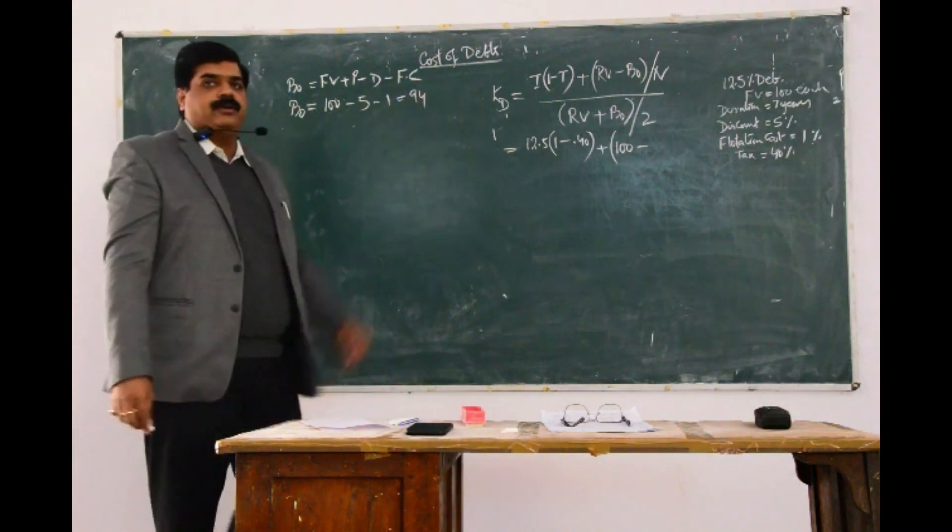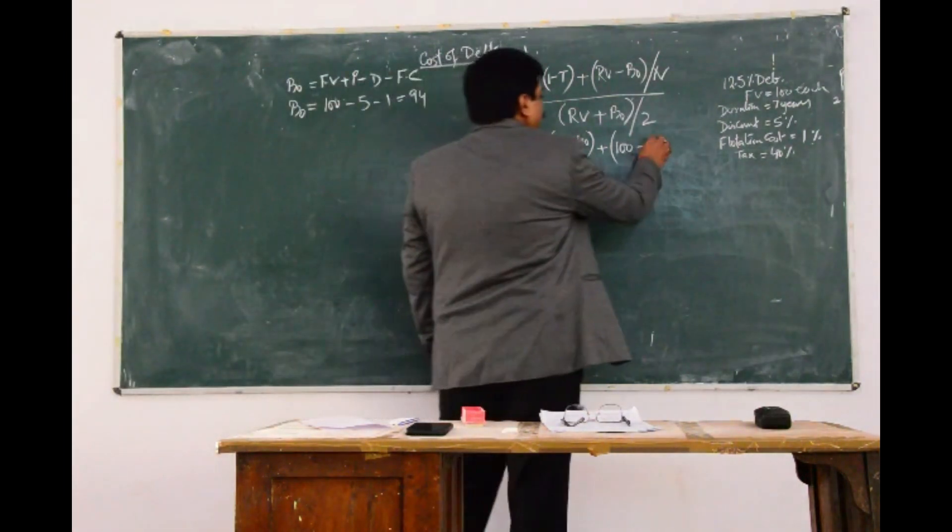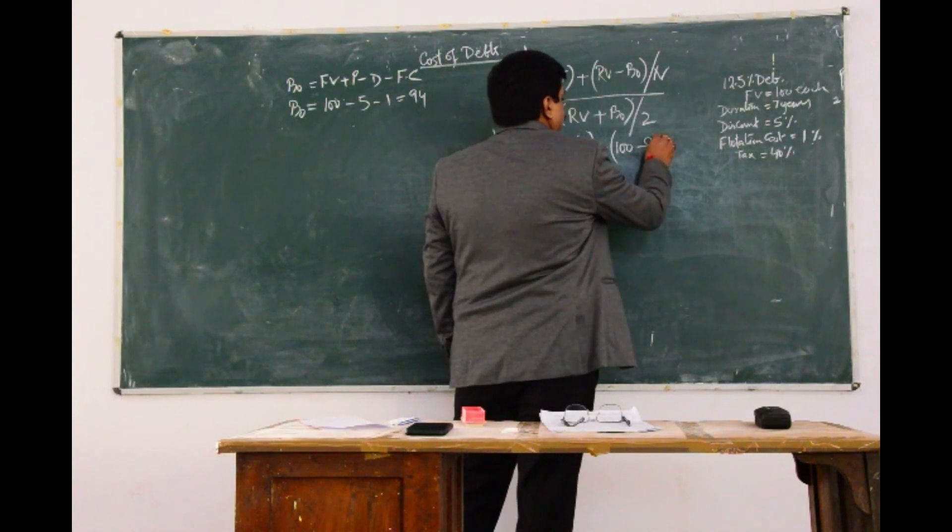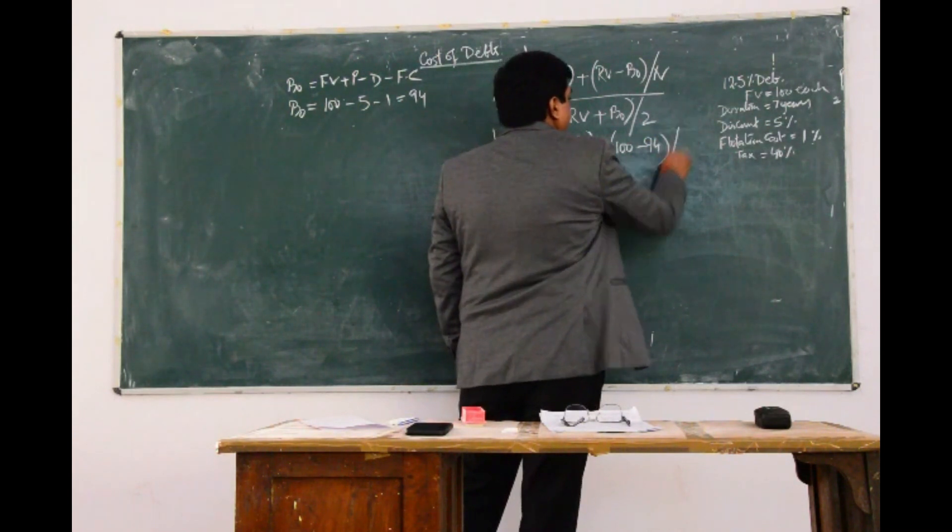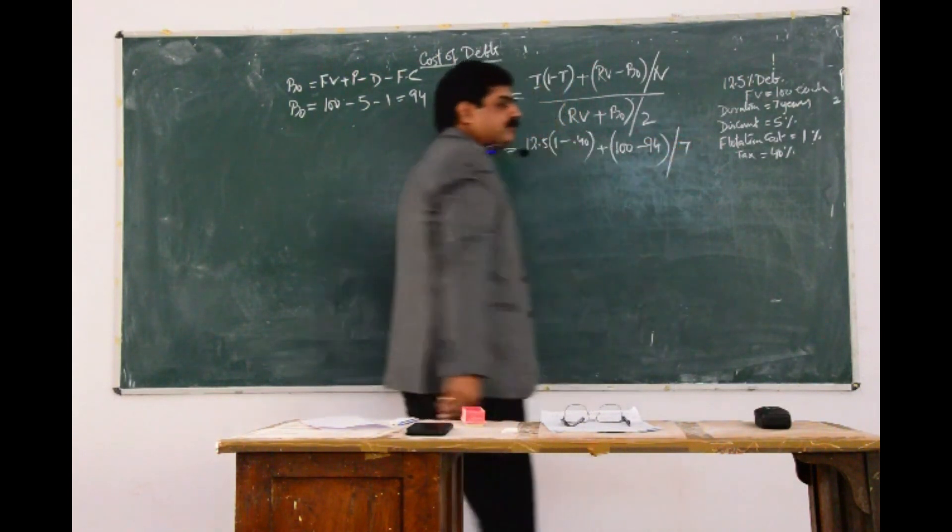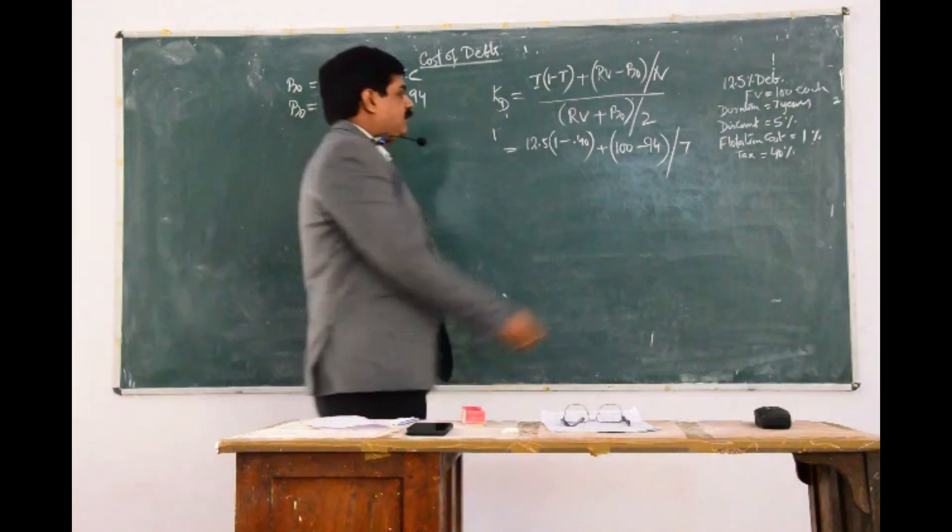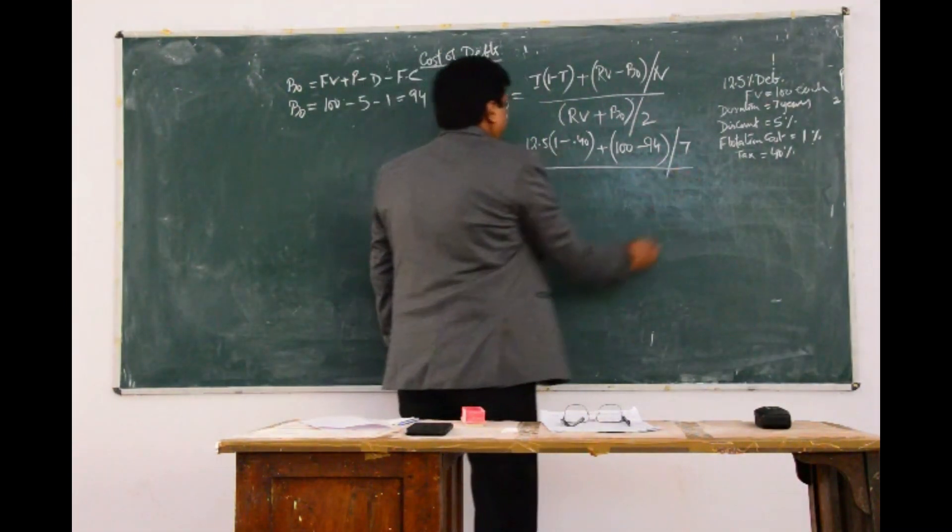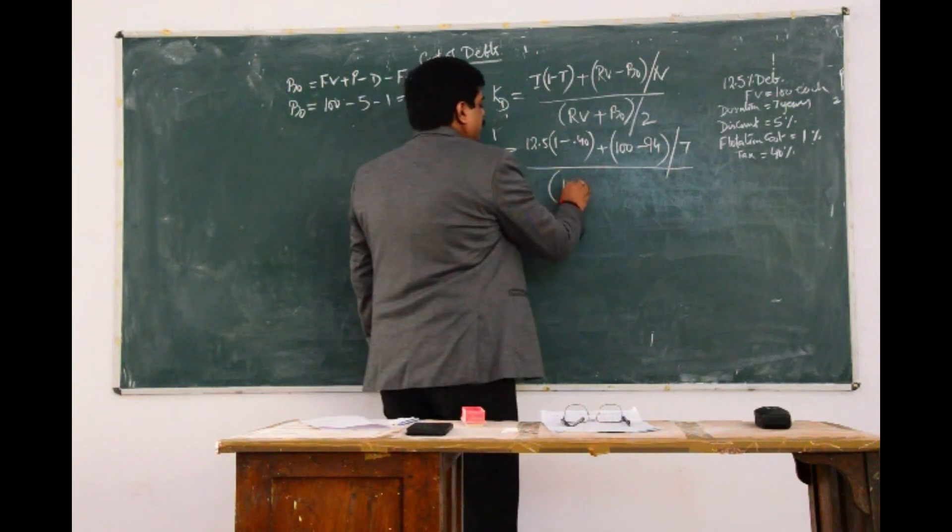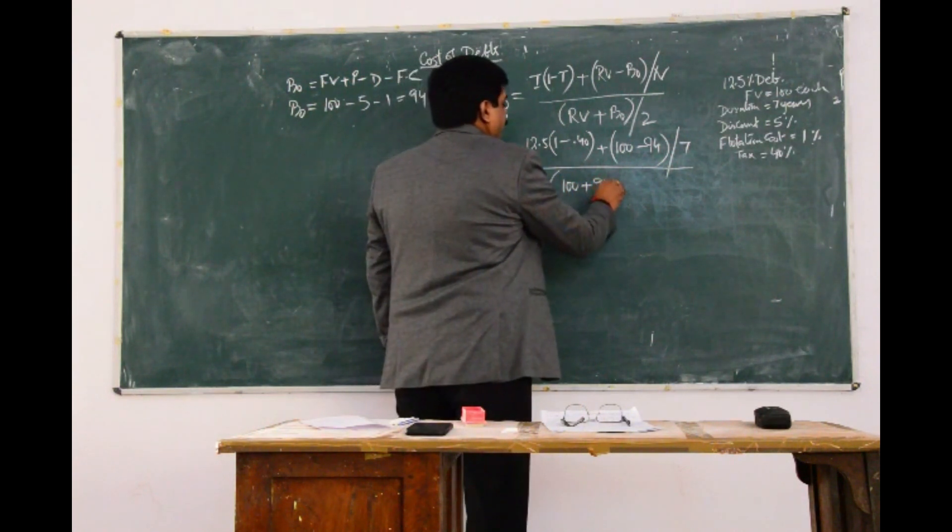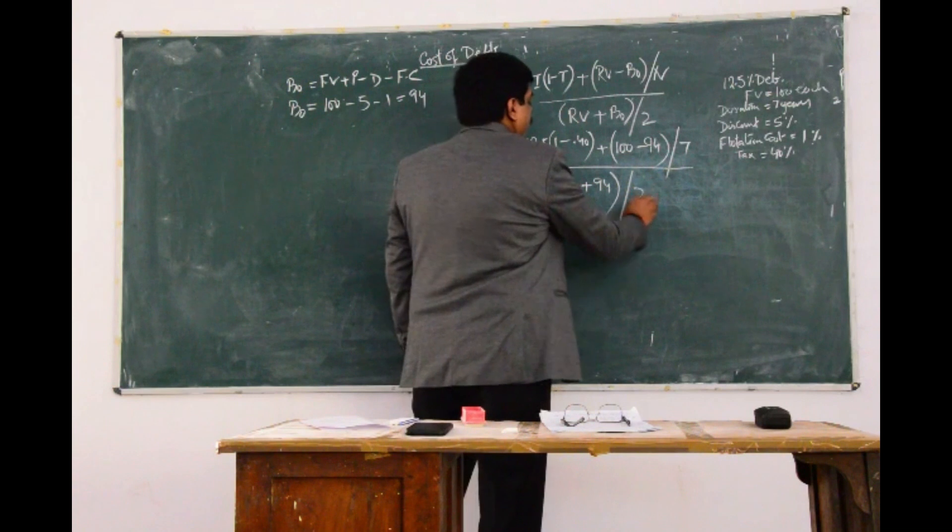94 will be your B0. Divide by N, N is 7 years, duration of the debenture, divide by RV 100, plus 94, divided by 2.